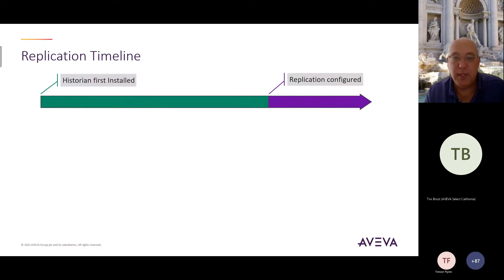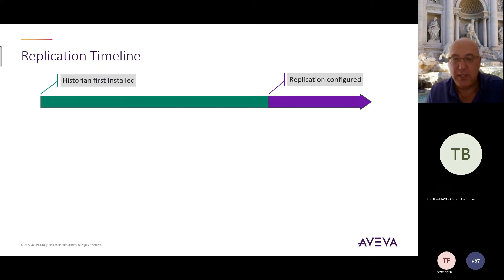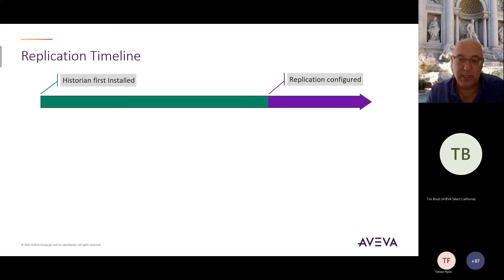Replication for the Historian is how we send data to other destinations, and now there are four of them: we can replicate to another Aviva Historian, to Insight, to PI, and to Data Hub.